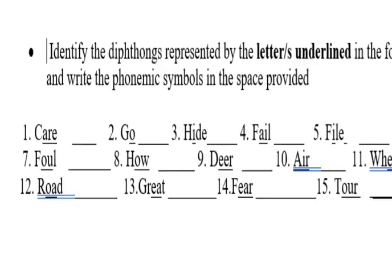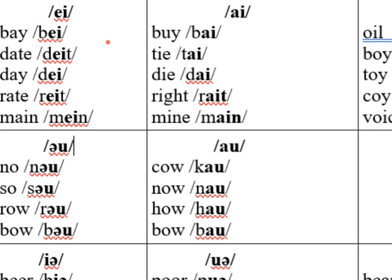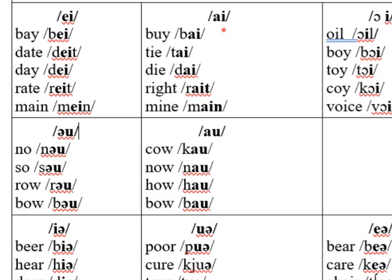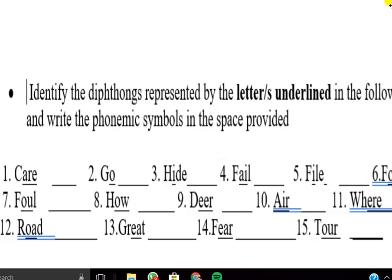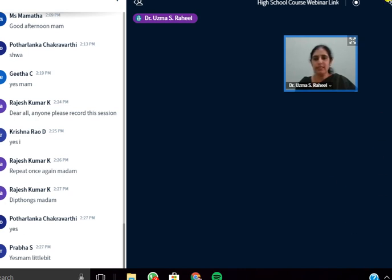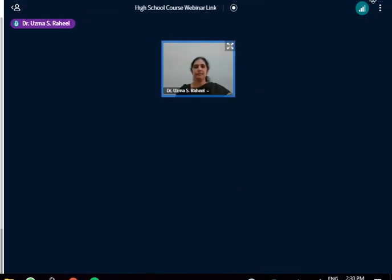Rajesh Kumar wanted a repetition of all eight diphthongs: /eɪ/, /aɪ/, /ɔɪ/, /əʊ/, /aʊ/, /ɪə/, /ʊə/, /eə/. Whatever we learned so far was at the phonemic level — that is the segmental features. But now let us move on to something beyond that, called the supra-segmental features.